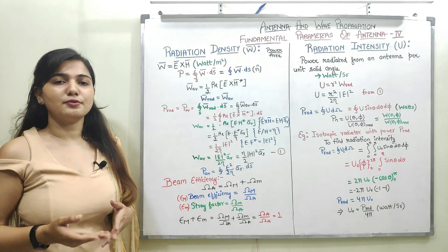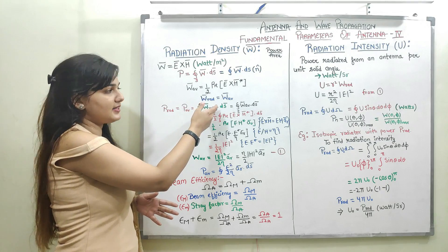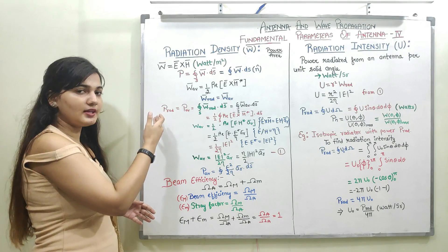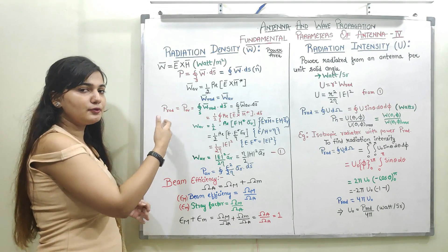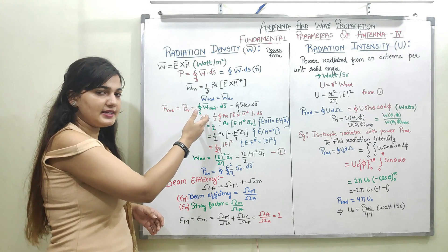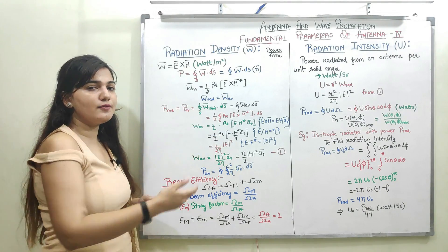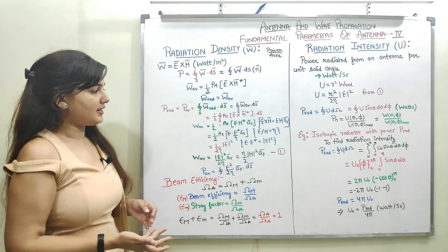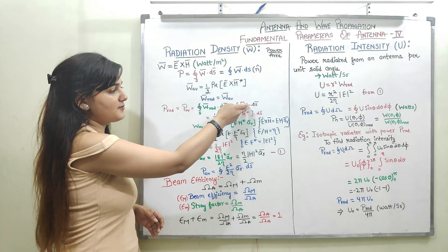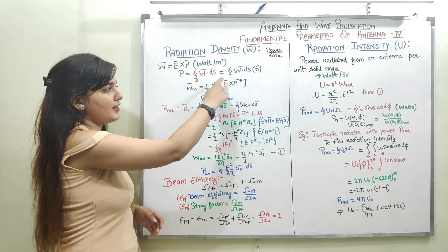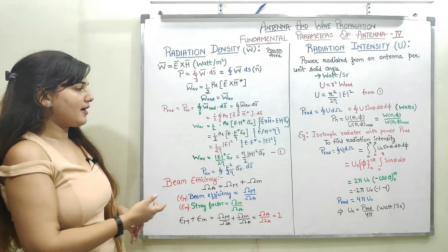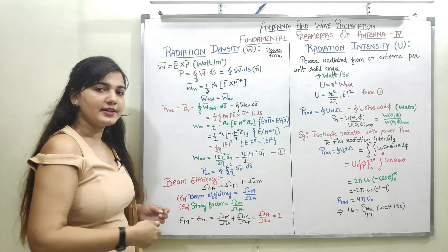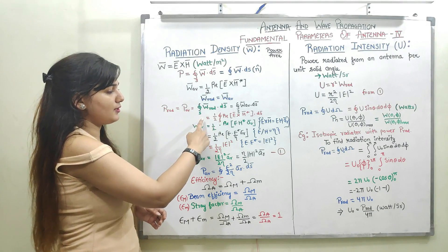For the far-field region, the radiating power density is equal to the average power density. Therefore, the total radiating power equals the total average power, which is obtained by integrating the radiating power density — or equivalently the average power density — over the entire surface. So the radiating power is equal to one-half times the integration of the real part of E cross H conjugate over the entire surface.